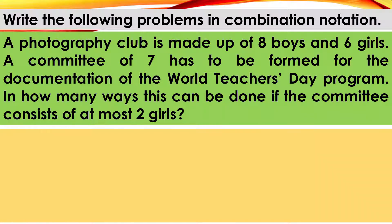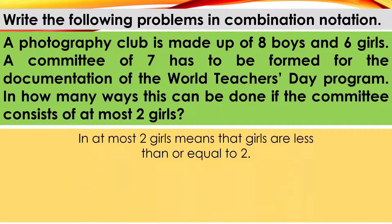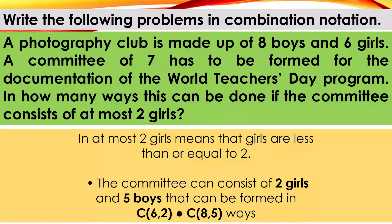A photography club is made up of 8 boys and 6 girls. A committee of 7 has to be formed for the documentation of the world teachers' day program. In how many ways this can be done if the committee consists of at most 2 girls? In at most 2 girls means that girls are less than or equal to 2. Therefore, the committee can consist of 2 girls and 5 boys can be formed in this way.